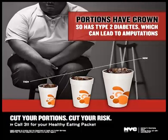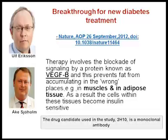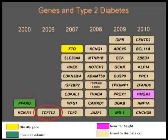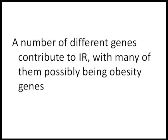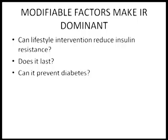Even the breakthroughs look at reducing insulin resistance — this is a prototype example of new treatments targeting insulin resistance. There are genes for obesity, genes for beta cells, and genes for insulin resistance, so there are genes for everything. A number of different genes contribute to insulin resistance, and most relate to obesity. Obesity itself is a genetic disorder. So modifiable factors make insulin resistance dominant.